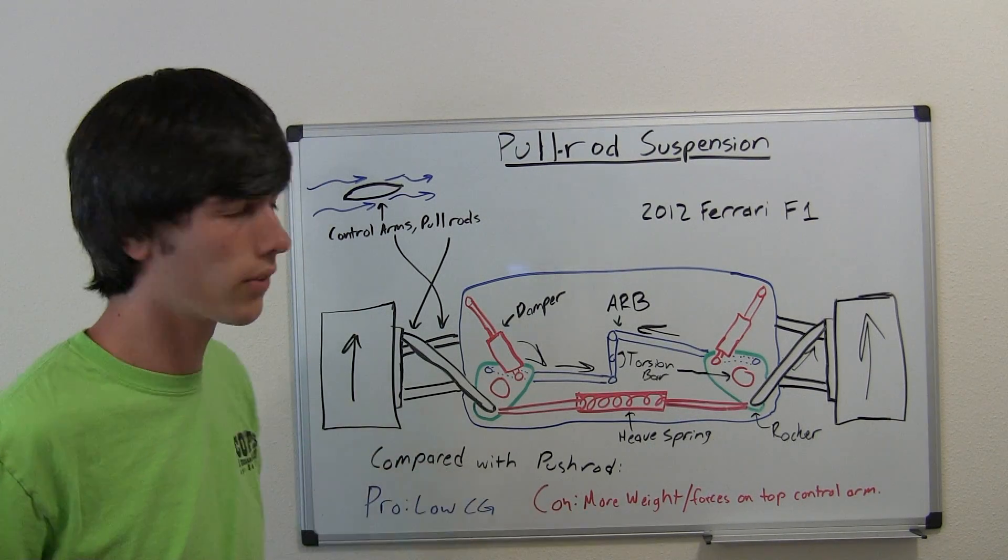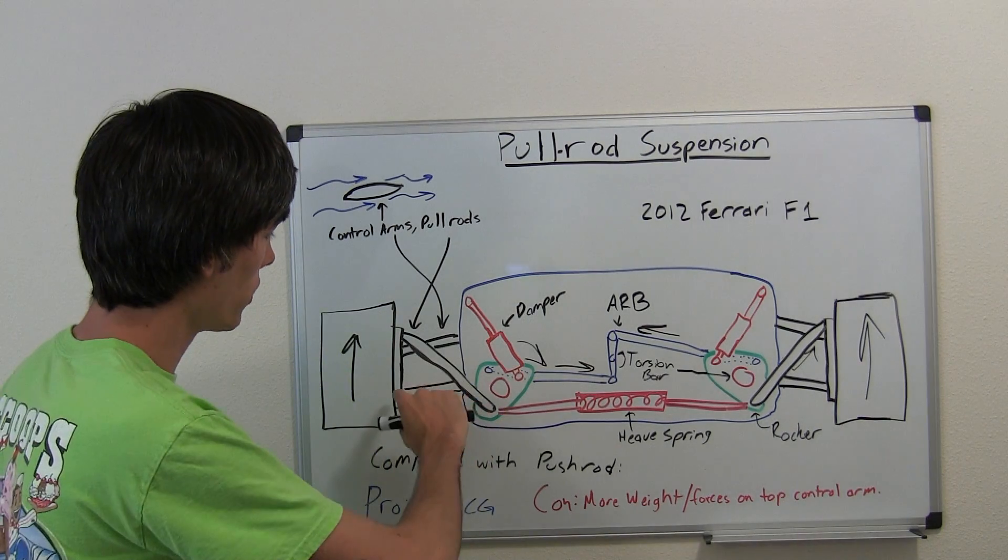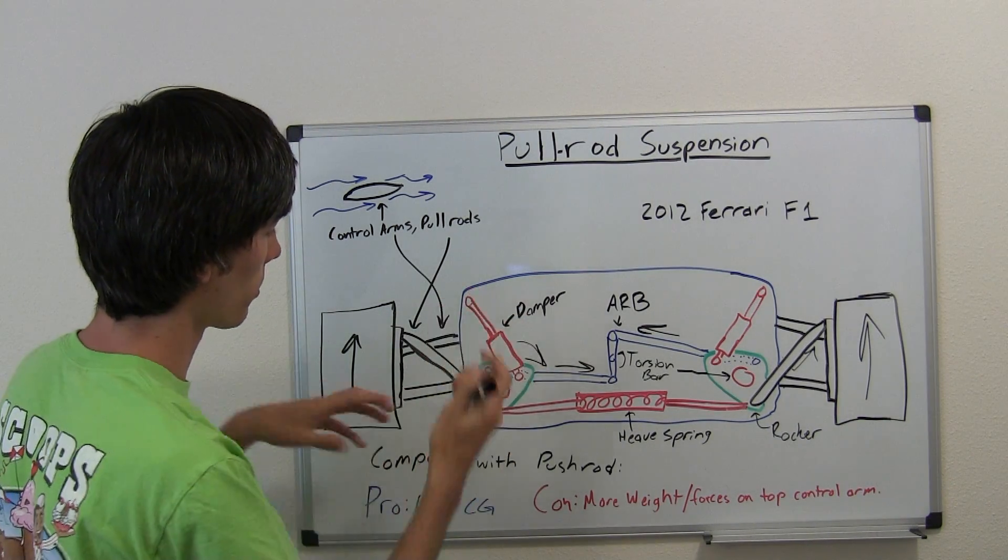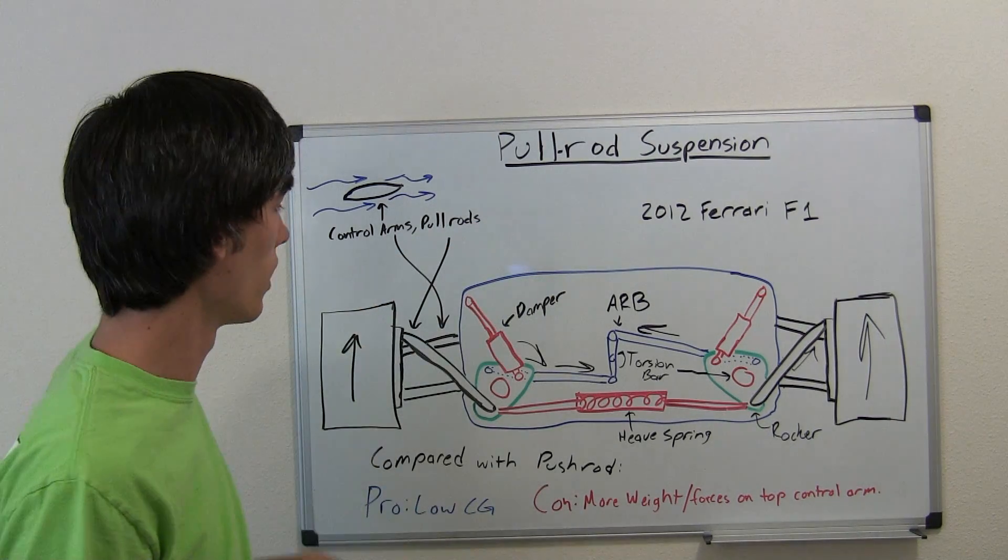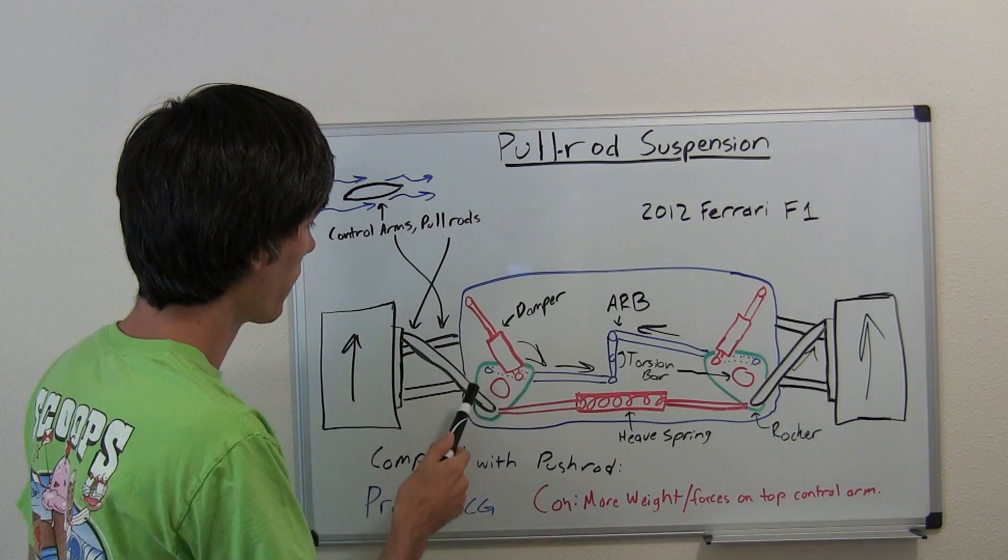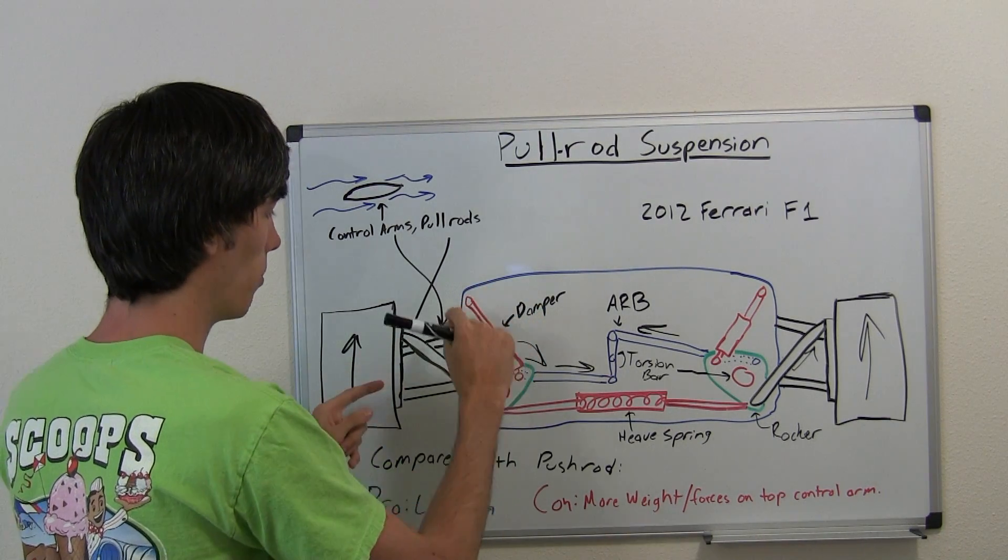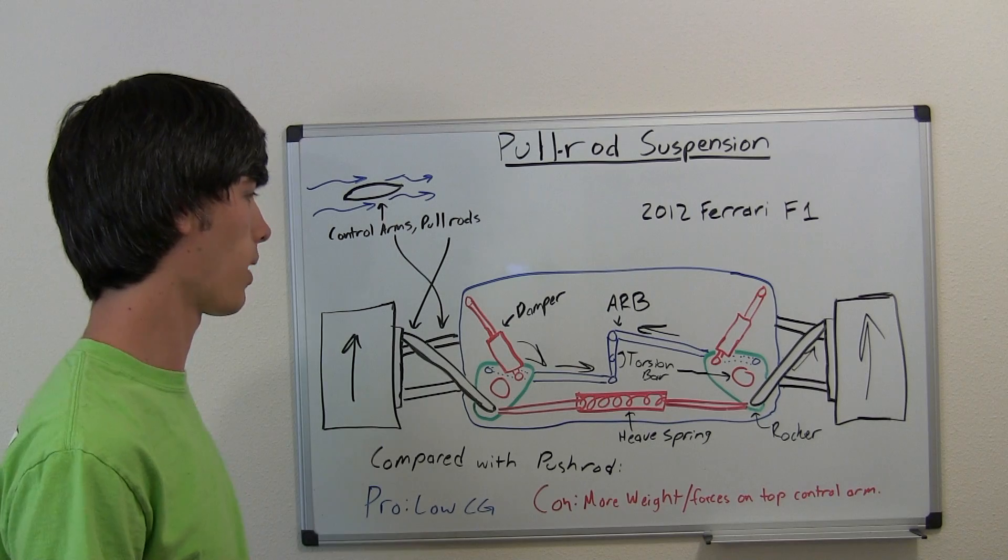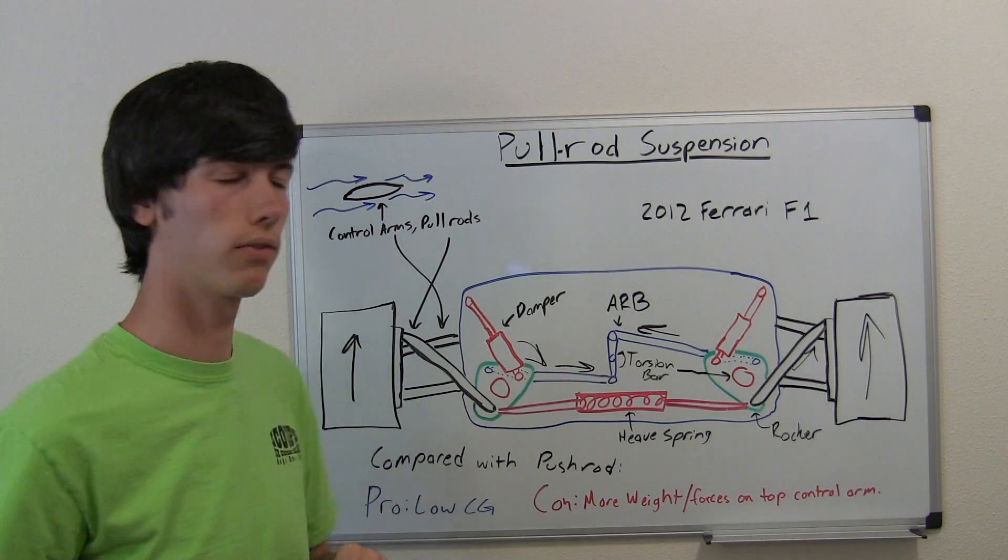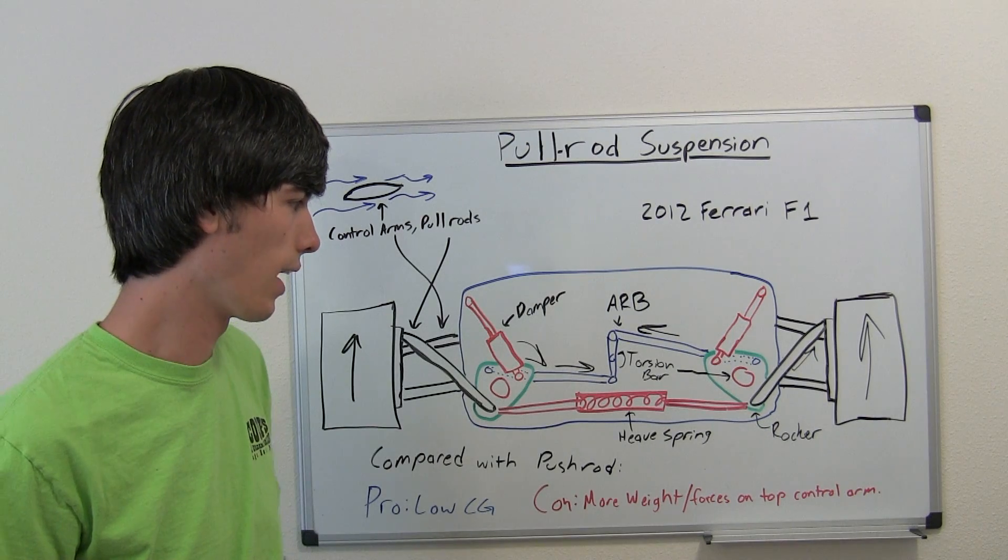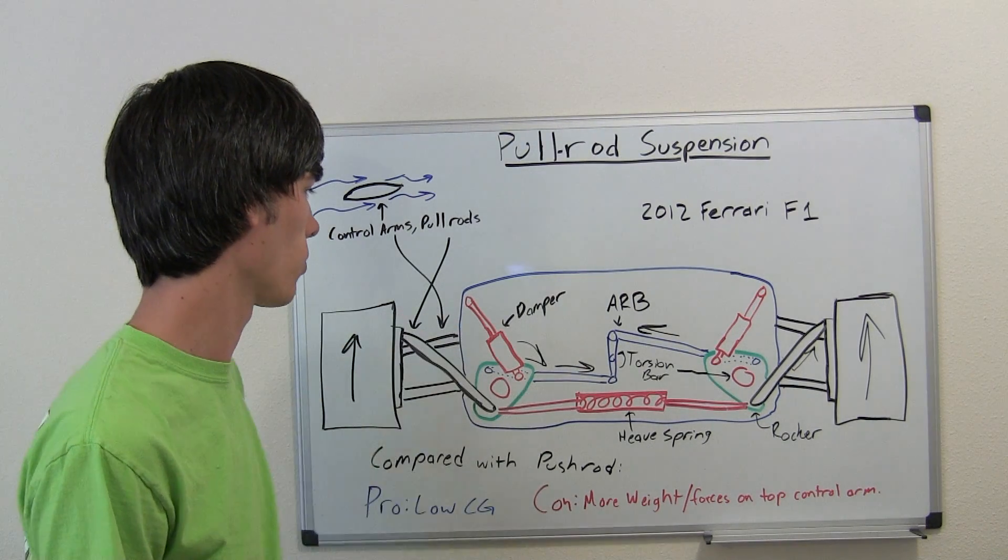Now what's the downside? Well, before you had this push rod that was supporting some of the forces and the weight of the car coming down, whereas now that pull rod isn't doing that. So the weight is now pressing down mostly on this upper control arm. And the problem with that is you have to beef up that upper control arm so it can handle these extra forces and in doing so you increase the weight.